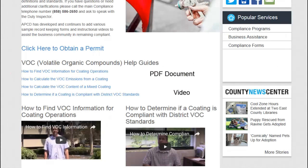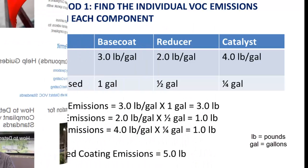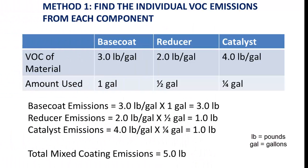If you need help finding this information, you can view how to find VOC information on the district website. To find the VOC emissions from a component of a coating, simply multiply its VOC of material by the amount used.